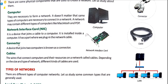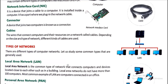Next is the connector — a device that joins two computers is known as a connector. By the name you can understand it means connecting several things together. Next are cables — the wires that connect computers and their resources on the network are called cables. Depending on the size and type of network, different kinds of cables are used.